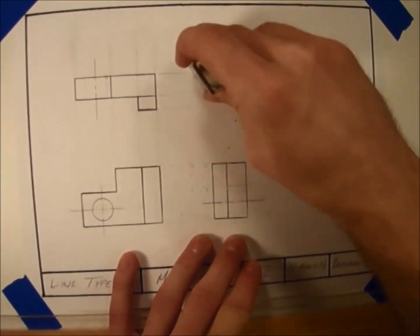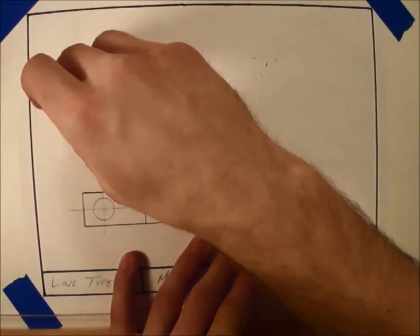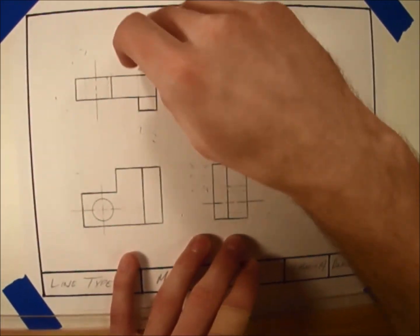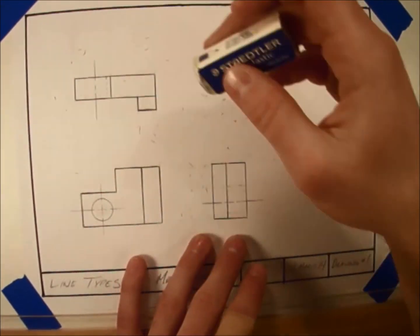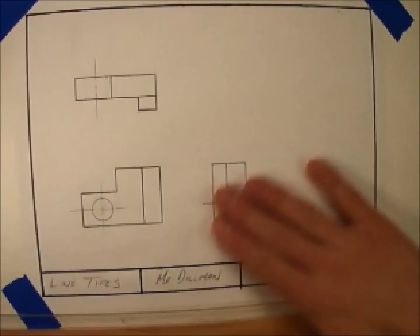These aren't the only types of lines used in technical drawing, but they will get you started. After a little practice reading and creating drawings, you'll be able to read different types of lines just as easily as you can read a book. Or, you'll be able to read others too. Please subscribe.